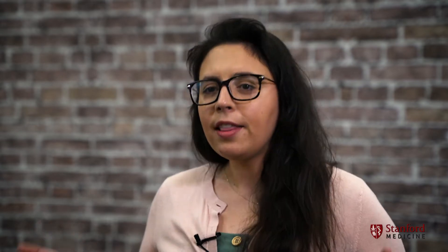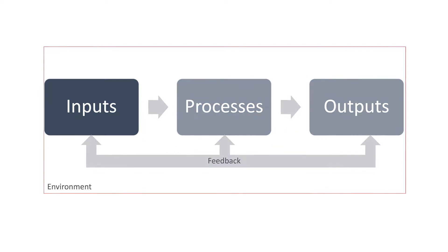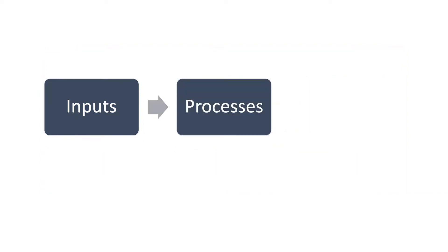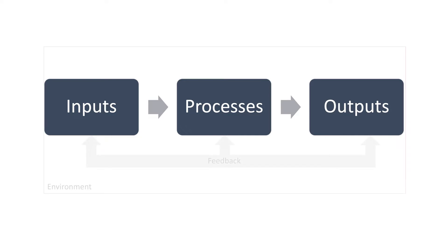At a high level, systems theory essentially looks like this diagram. In every system there are inputs that feed the processes which produce outputs within a given environment. How each of the processes, subsystems, components, etc. work together to produce outputs is systems theory.